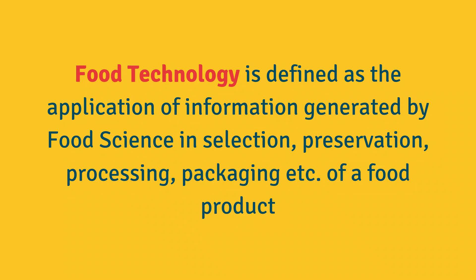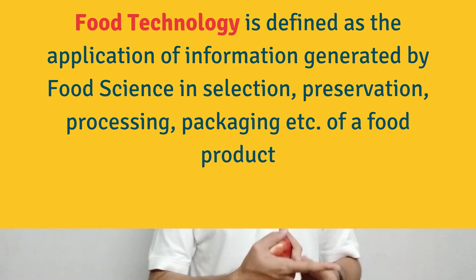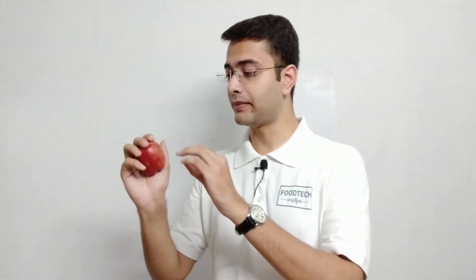Food technology is defined as the application of information generated by food science in the processing, packaging, distribution, and selection of a food product. Food science on its own is not enough — its information must be implemented. But equally, a food technologist desperately needs the information generated by food science. Without it, a food technologist will not be able to process or produce a food product. For example, as a food technologist, let's say I am processing this apple into apple jam.